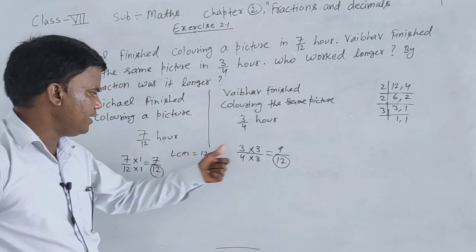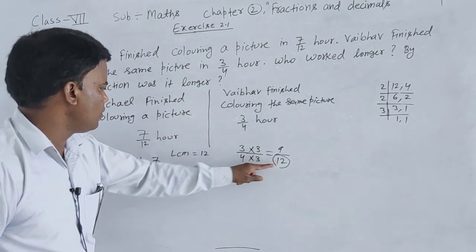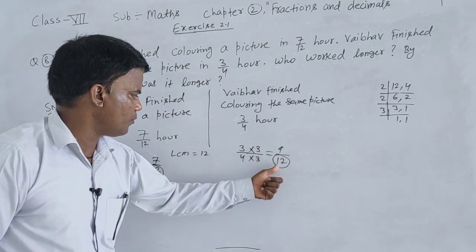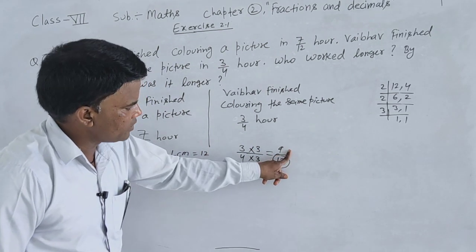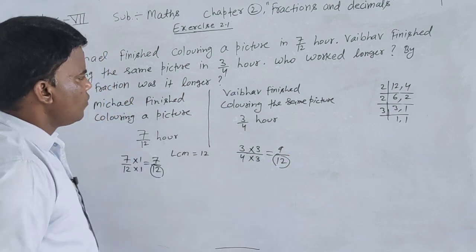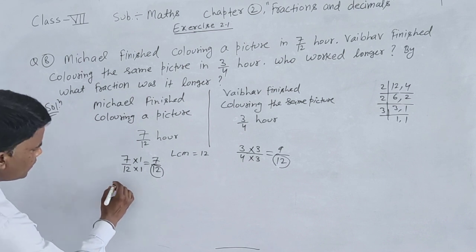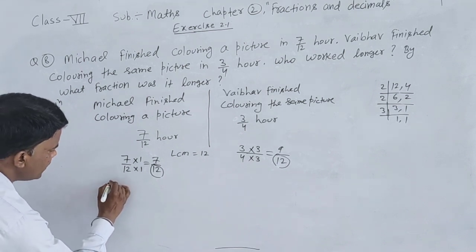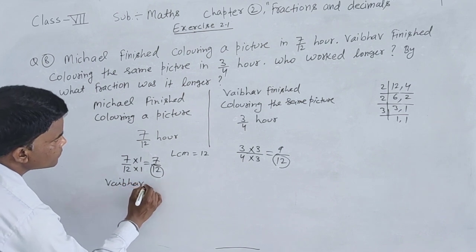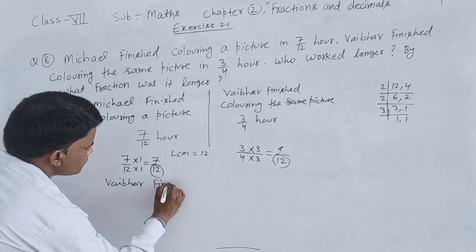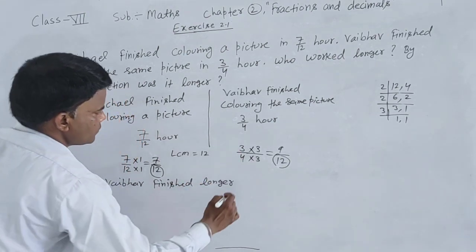Now denominators are the same. Comparing numerators: 7 is less than 9. Since 9/12 is greater, Vaibhav finished in longer time, meaning Vaibhav worked longer.